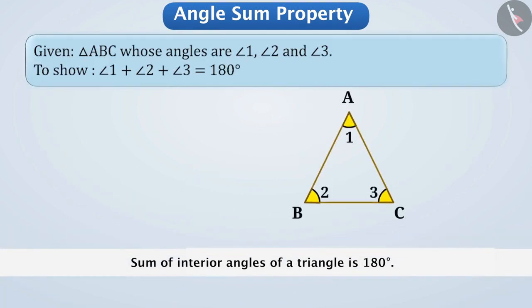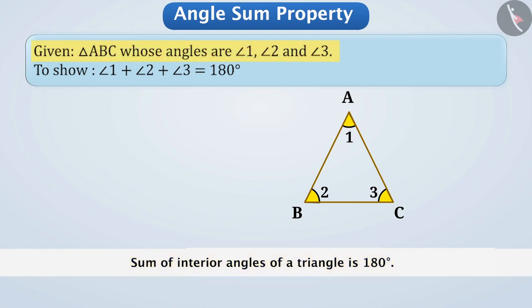Now, with the help of logical statements, we will verify that the sum of the interior angles of a triangle is 180 degrees. We are given triangle ABC whose angles are angle 1, angle 2, and angle 3. We need to show that angle 1 plus angle 2 plus angle 3 is equal to 180 degrees.